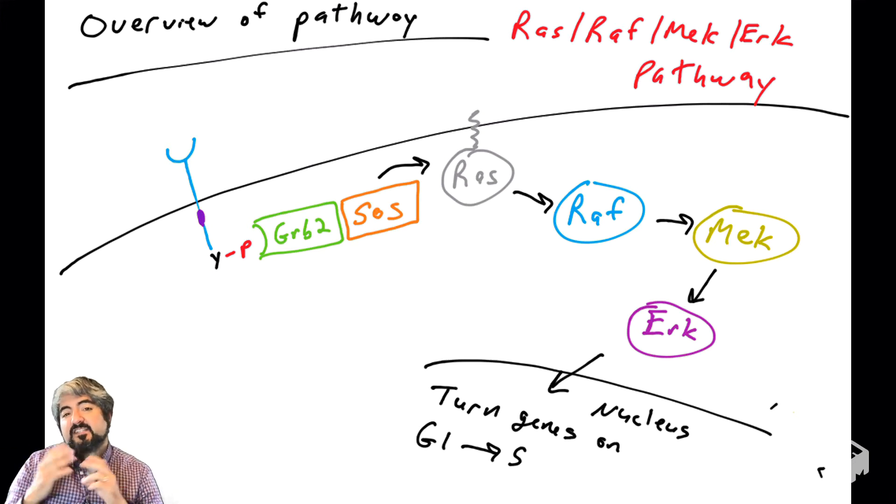Hi. So in this video, we're going to continue to talk about RAS, how it's regulated and its role in cancer. It plays a central role in the RAS-RAF-MEK-ERK pathway, as we covered in previous videos. We're going to see how RAS activity is regulated and how it is dysregulated in human cancers.